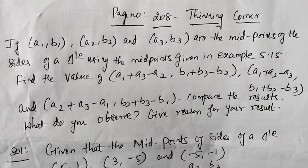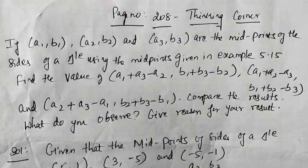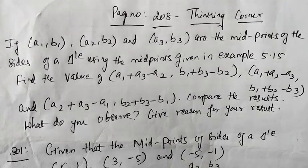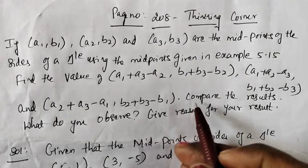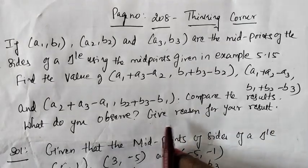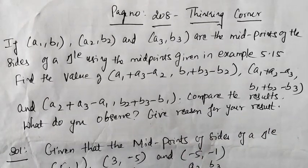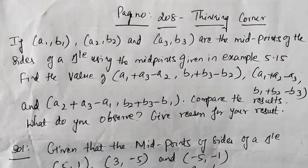If (a1,b1), (a2,b2) and (a3,b3) are the midpoints of the sides of the triangle, using the midpoints given in example 5.15, find the value of these expressions and compare the result. What do you observe? Give reason for your result.